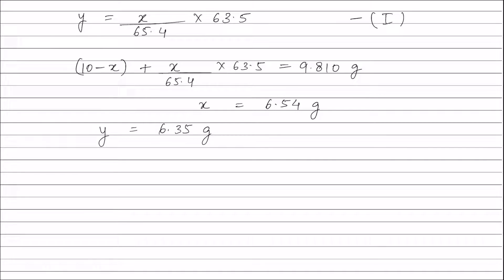In the second part of the question we have to find the molarity of copper sulphate solution. From the reaction, moles of copper equals moles of copper sulphate. Therefore, molarity of copper sulphate solution equals moles of copper divided by volume of solution in liters. The volume of solution is 200 milliliters, which is 200 divided by 1000 liters. Solving this, the molarity of copper sulphate solution equals 0.5 M.